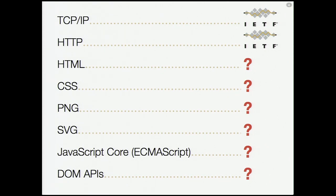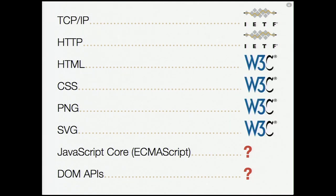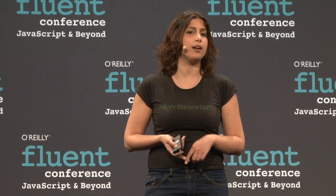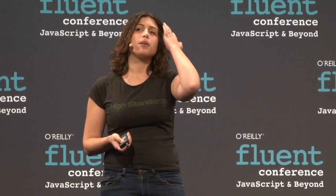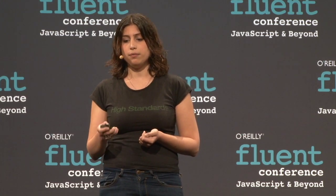W3C makes lots of the web standards we use every day, but not all of them. The ones related to the infrastructure of the web are usually made by IETF, like TCP/IP or the HTTP protocol. W3C makes pretty much all the languages we use daily, except the JavaScript core, which is basically ECMAScript — standardized by ECMA. However, most of the APIs we use, like XMLHttpRequest, DOM APIs, Selectors API, or local storage, are also W3C. That's why I'll focus more on W3C — not just because I work there, but also because tons of web standards we use every day are standardized there.